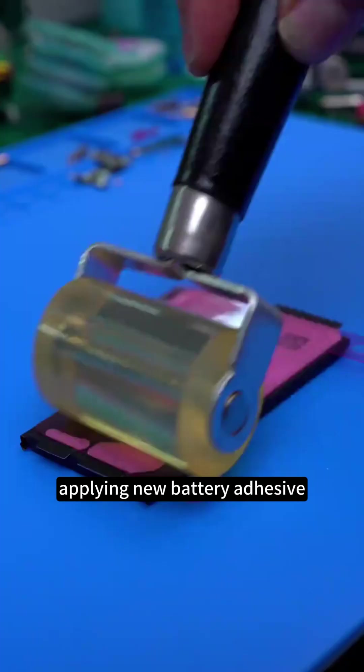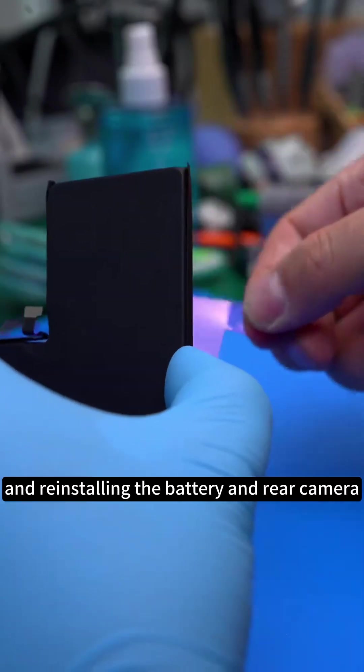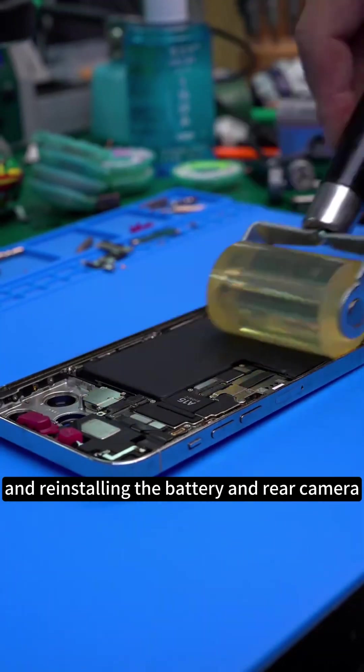Applying new battery adhesive, rolling it flat, and reinstalling the battery and rear camera.